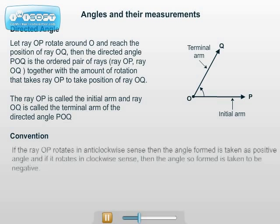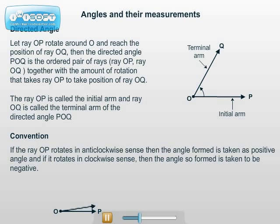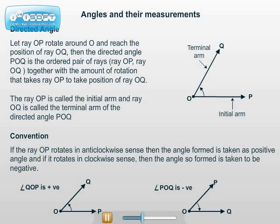Convention: If the ray OP rotates in anticlockwise direction, then the angle formed is taken as positive. If the ray rotates in clockwise direction, then the angle formed is taken as negative.